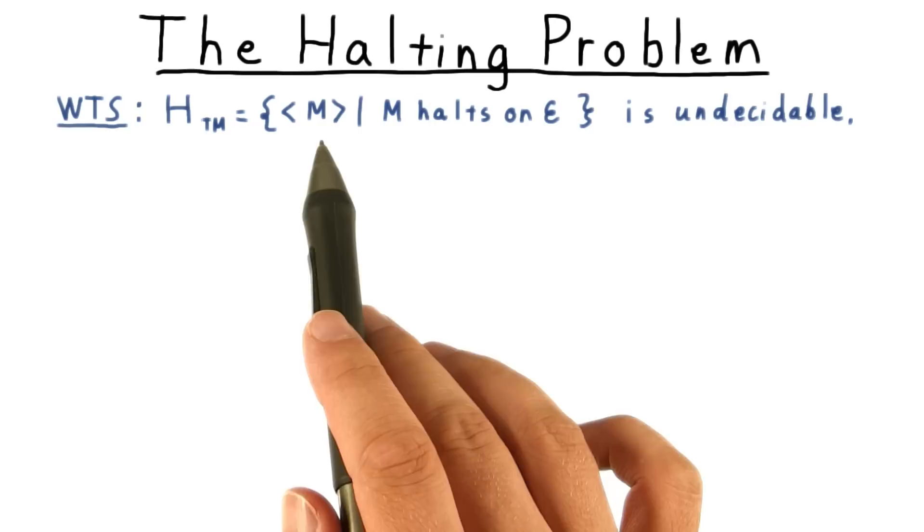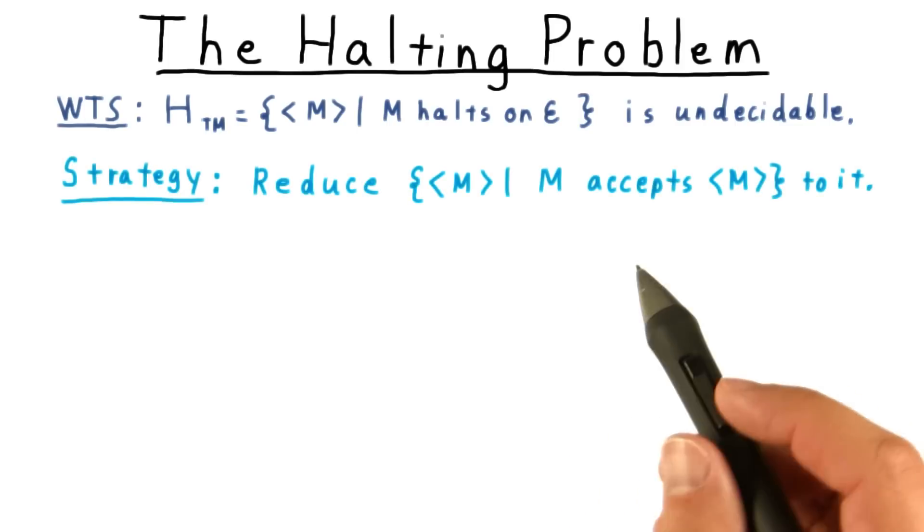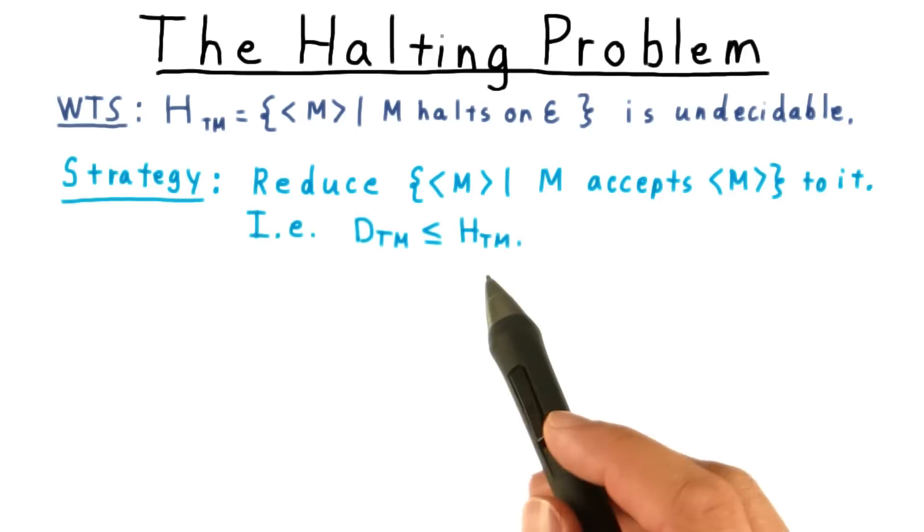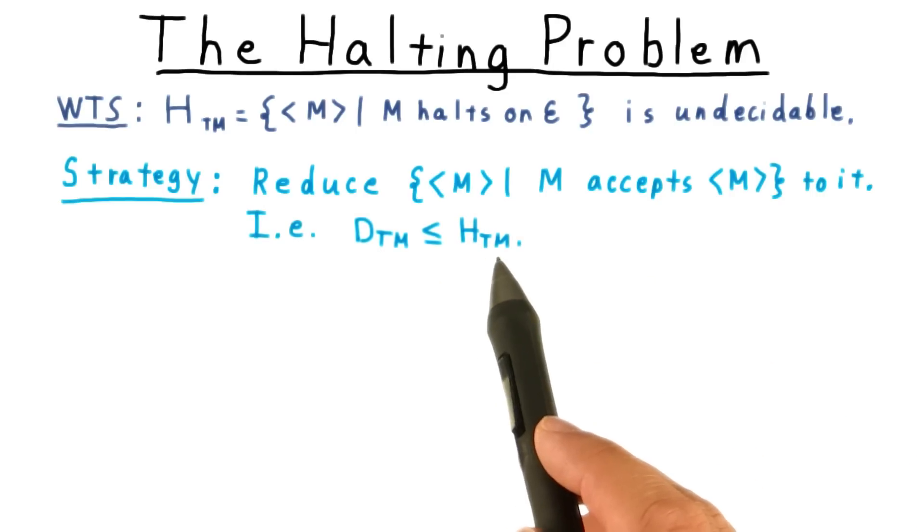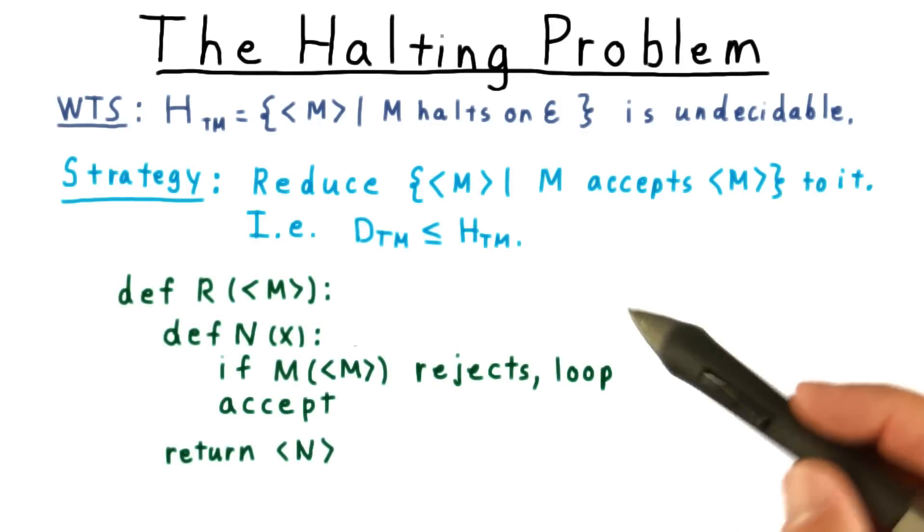The language of descriptions of Turing machines that halt on the empty string is undecidable. We'll do this by reducing from the diagonal language. That is, we'll show that the halting problem is at least as hard as the diagonal problem. Here is one of many possible reductions.